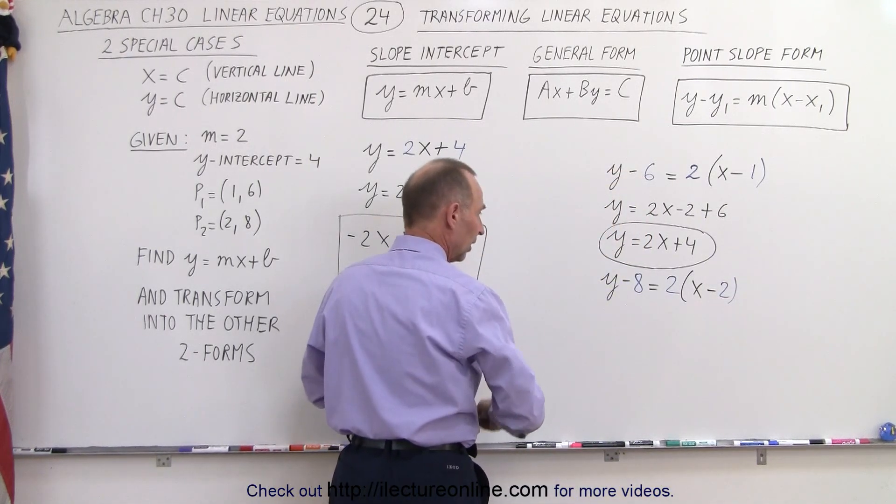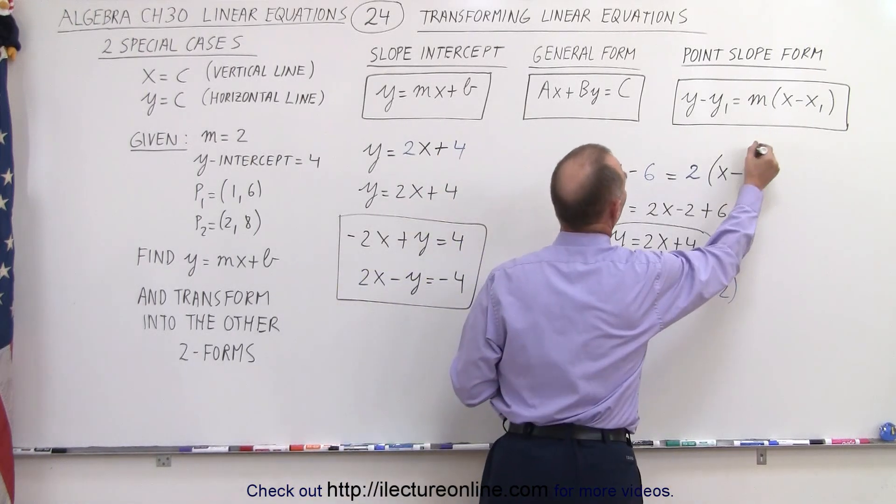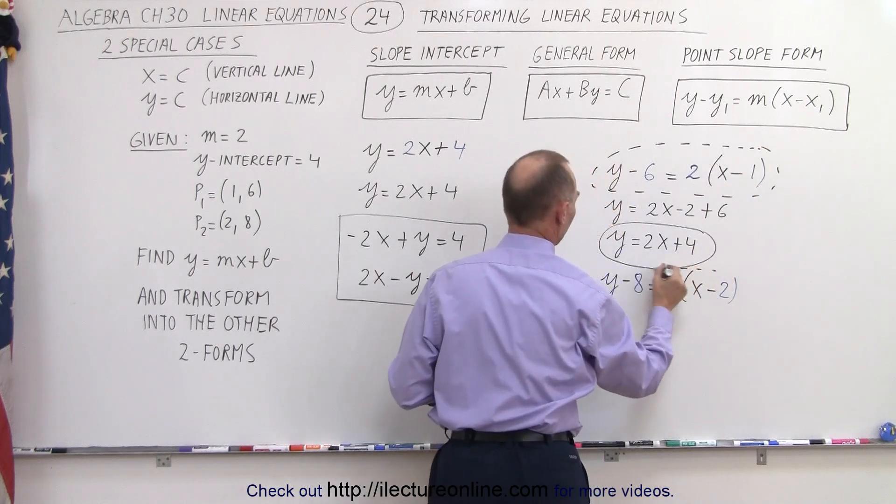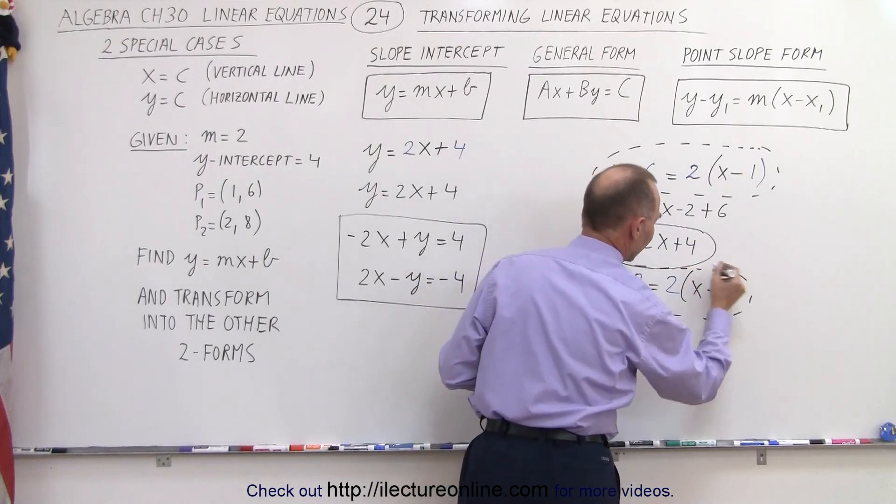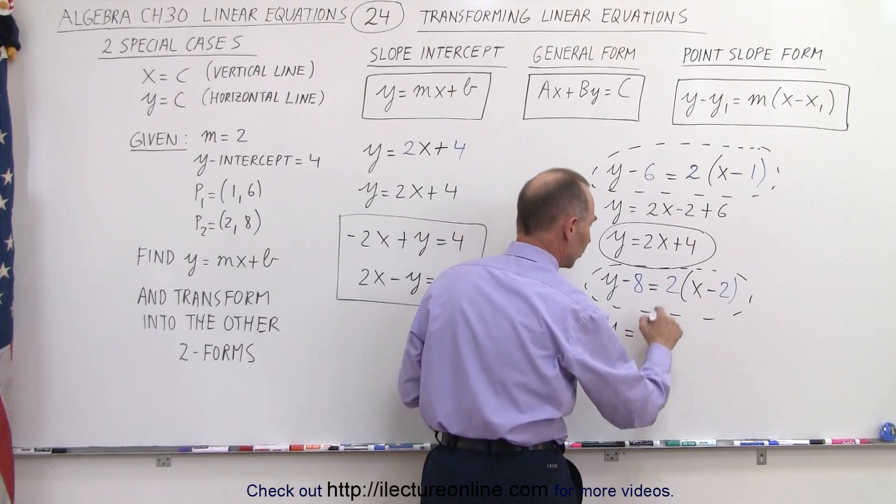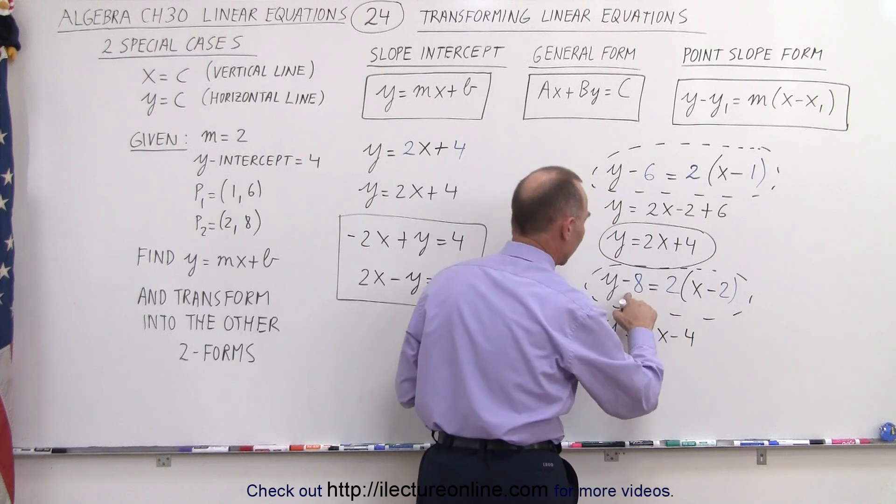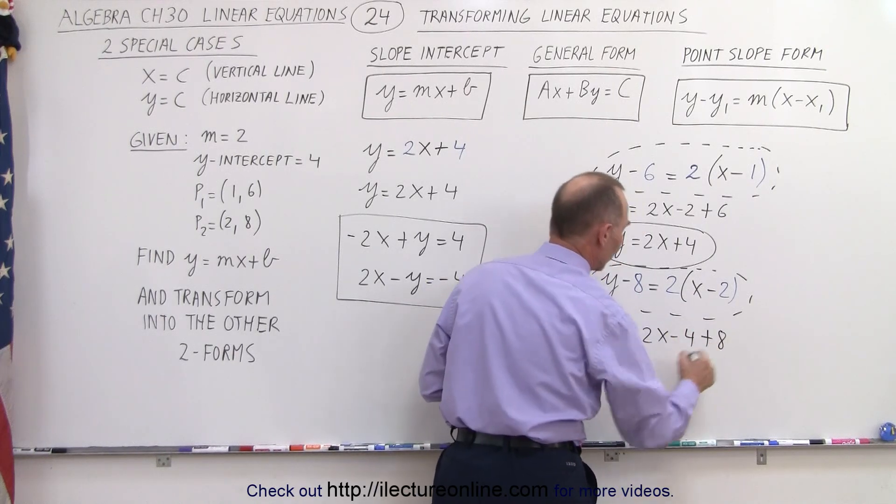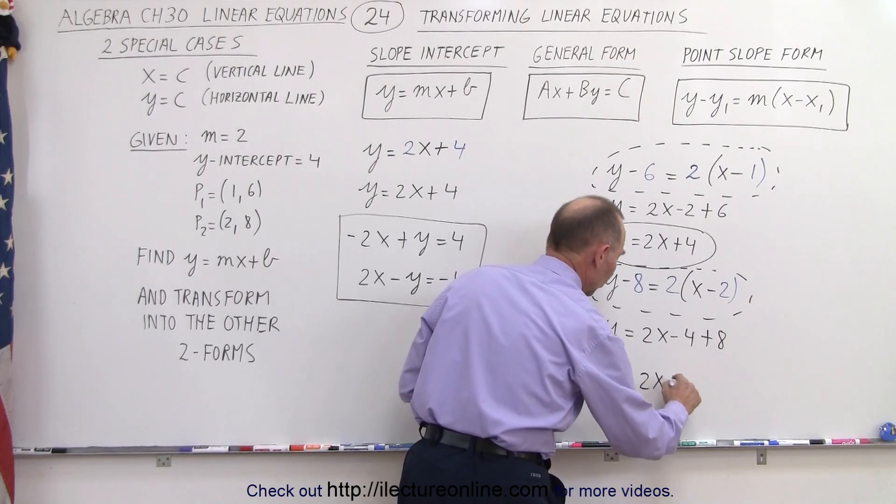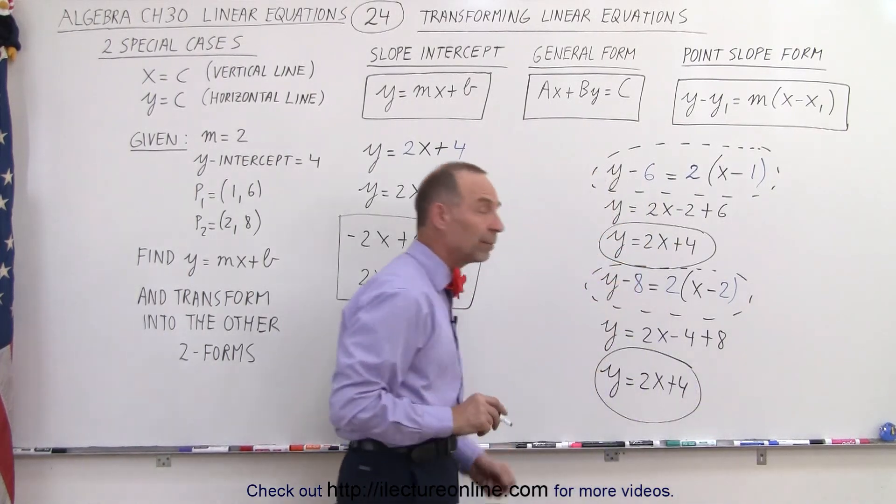And notice that if we simplify that, so here we have one form of the point-slope form. There we have another form of the point-slope form. But again, if we simplify that, let's see what happens. So we end up with y is equal to 2 times x. 2 times negative 2 is negative 4, and the negative 8 across becomes plus 8. And if we simplify that, we get y is equal to 2x plus 4. And again, the very same slope y-intercept form that we got before.